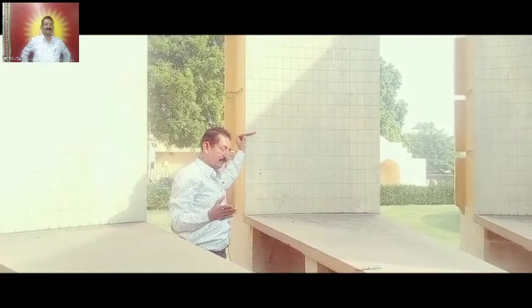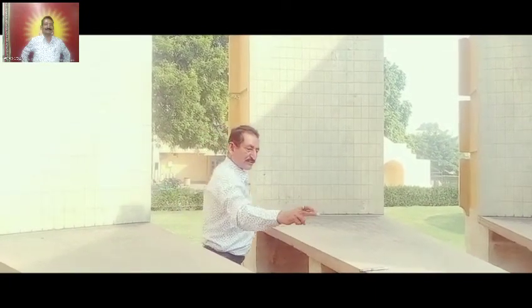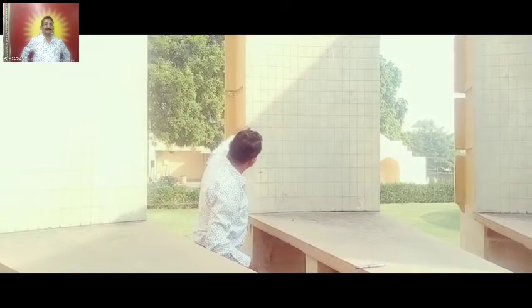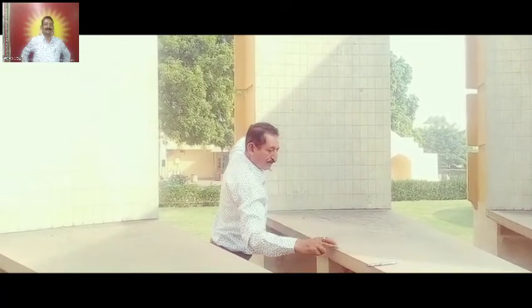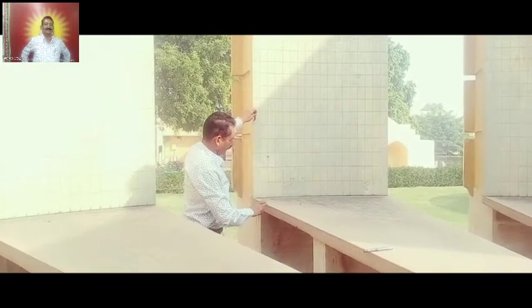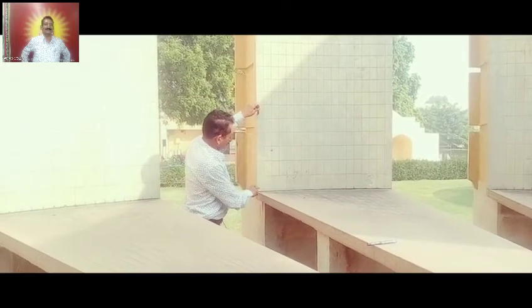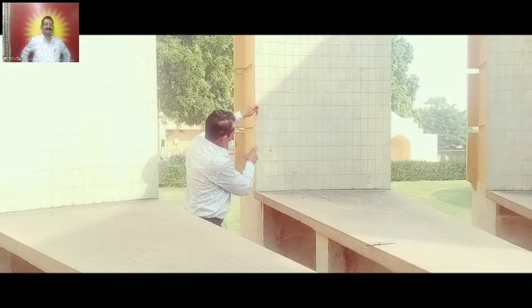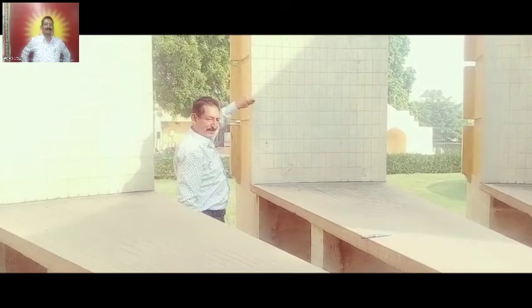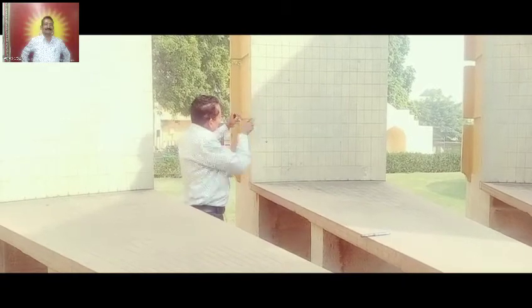From the equator, 23 and a half degrees north and 23 and a half degrees south. This is the equator line at 0 degrees. From here, counting 23 and a half degrees — that point is the Tropic of Capricorn, and 22nd December the shadow is there.